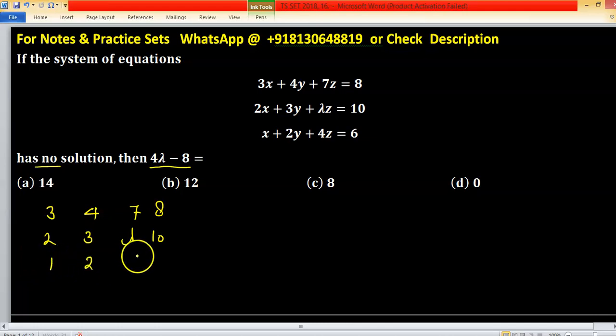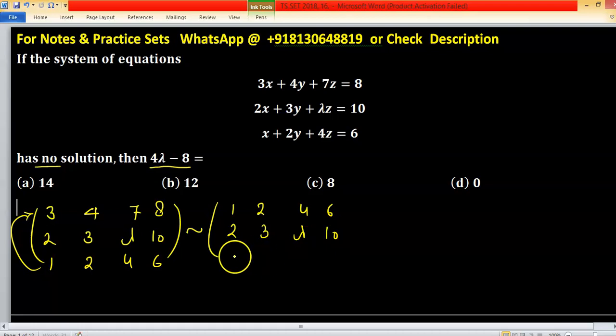The third row is 1, 2, 4, 6. Now interchange the first and third rows. We have the equivalent matrix: first row 1, 2, 4, 6; second row 2, 3, lambda, 10; third row 3, 4, 7, 8.